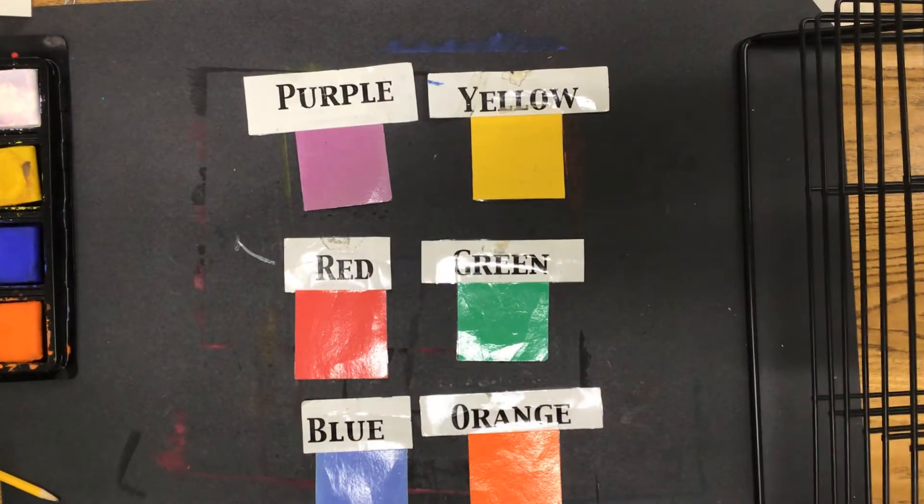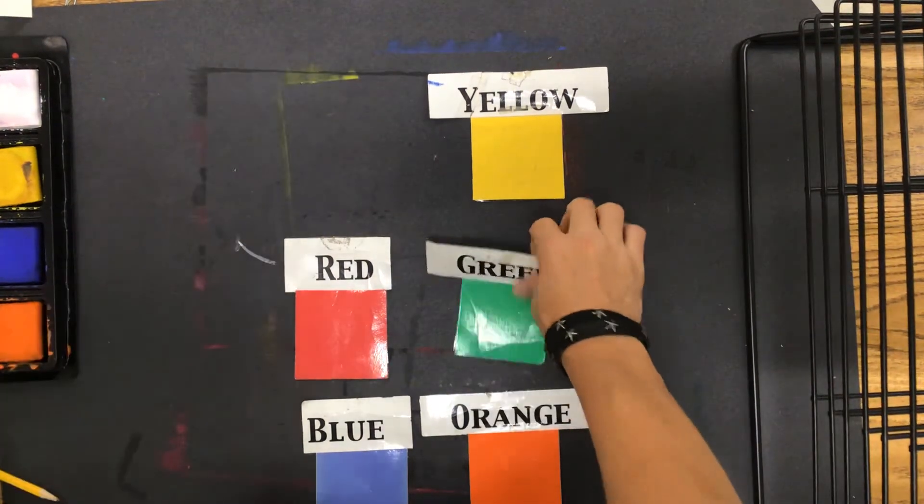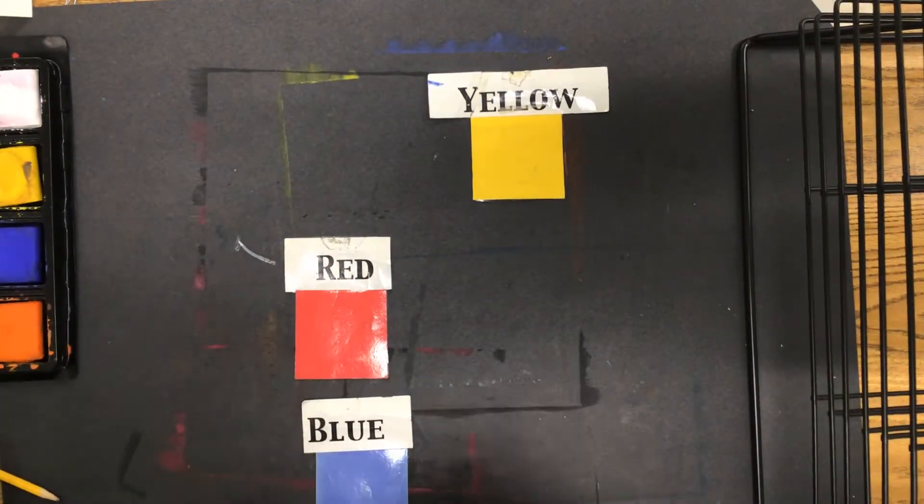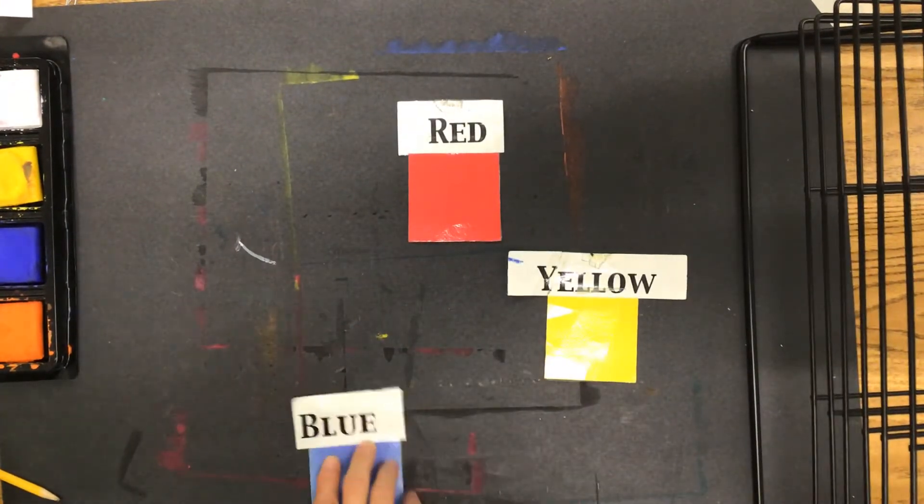The way that you would know which ones are the complements of each other is you would have a color wheel. So a color wheel starts out with the primary colors. So if we arrange these so that we would see an entire color wheel,